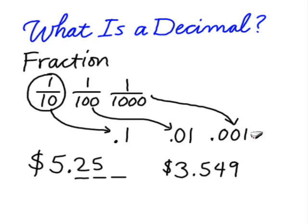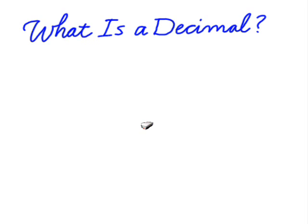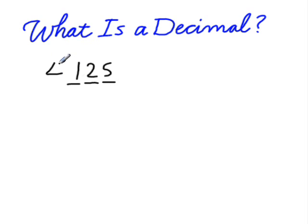In a review of place value, let's look at the number 125. This digit is in the ones place, this digit is in the tens place, and this digit is in the hundreds place. Extending further, a digit there would be in the thousands place. If we put a decimal point here and place digits on the right side, we have the tenths place — tenths has a 'th' after it, distinguishing 'tens' from 'tenths.'